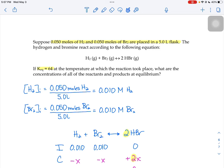The first thing we have to do when given the moles and the liters is find the molarity of all the chemicals given. So we took the 0.050 moles of both hydrogen and bromine and divided by the 5 liters given.